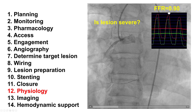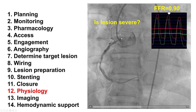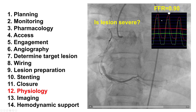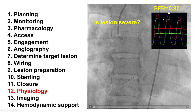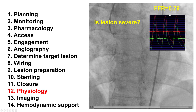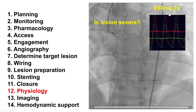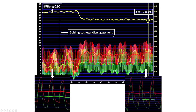Regarding assessing the severity of the lesion, physiology can be done. However, it is very important to ensure there is no dampening of the pressure. This is an example of an osteal RCA lesion: the FFR is 0.9, suggesting it is not significant. However, looking at the waveform, the aortic pressure waveform is dampened. Once the guide is moved back out into the aorta, the aortic waveform looks great and the FFR is actually ischemic. So it is very important when doing FFR or resting indices for physiologic assessment of osteal lesions to ensure the guide is disengaged and there is no pressure dampening.